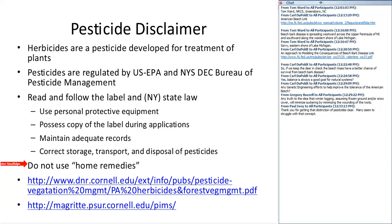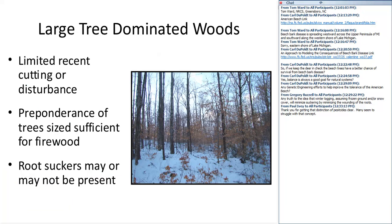John is saying that basically any disturbance stimulates root suckering, which is consistent with what I've seen as well. Let's look at woodlots dominated by firewood-sized and larger trees. These probably have had little or no recent cutting. The beech bark disease may have already gone through — the killing front has passed and the aftermath forest has matured — or the killing front hasn't arrived yet. There may or may not be many root suckers present.